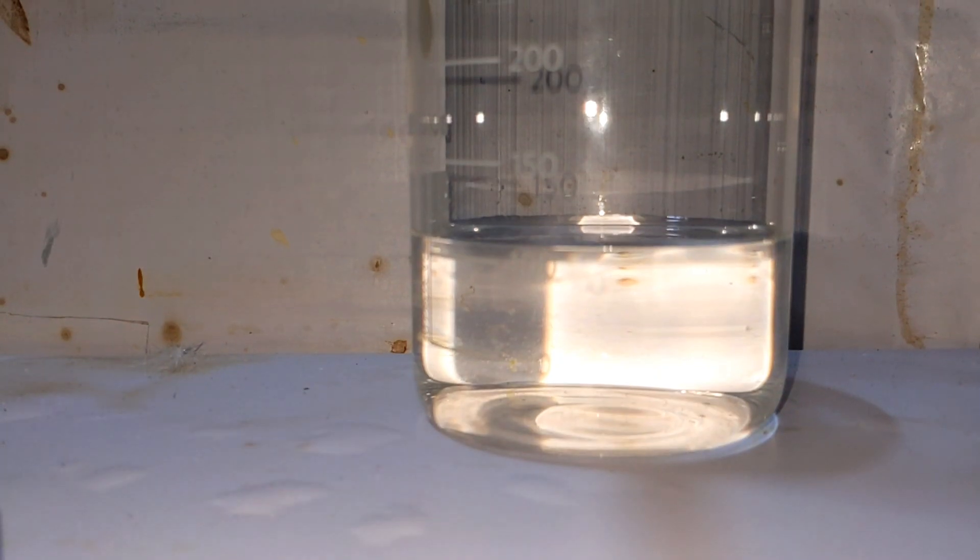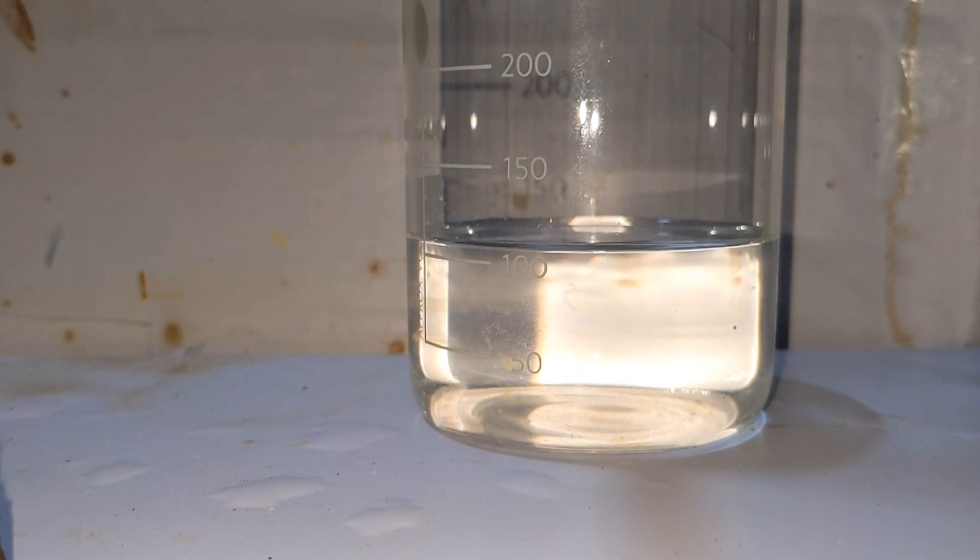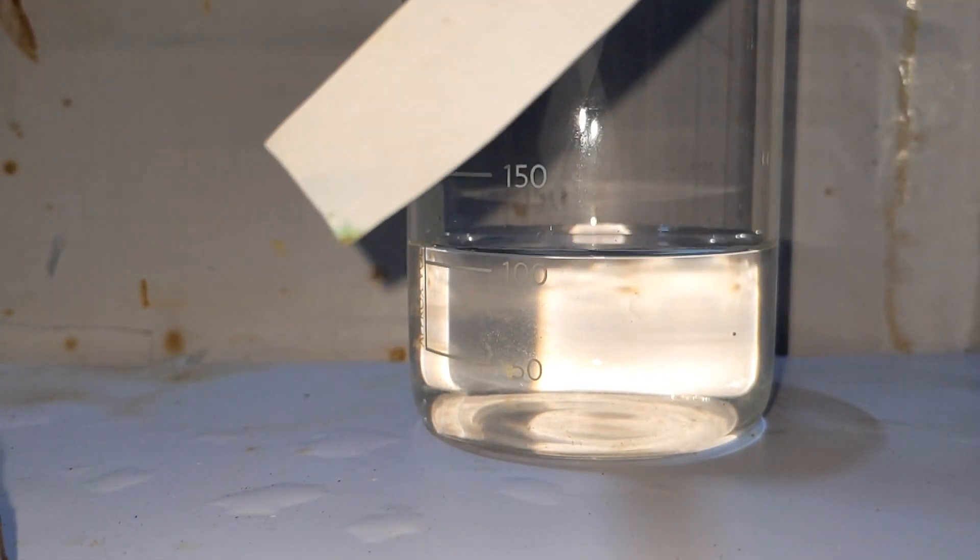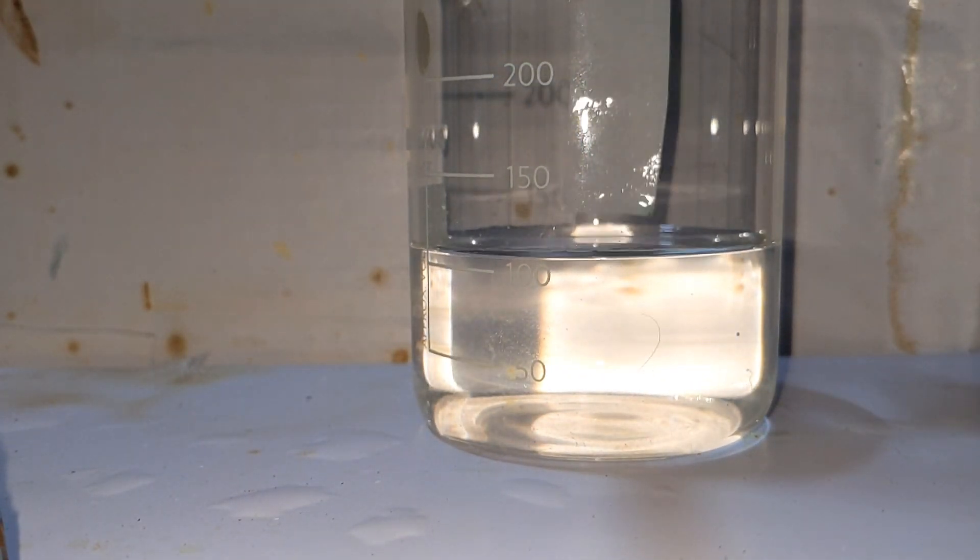Now we will do a simple test using lead acetate. Here I have a solution of lead acetate. Into that I will dip a filter paper and I will soak the filter paper in lead acetate and then I will dry this filter paper.